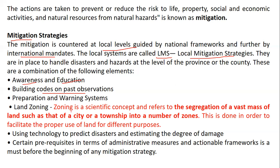Land zoning is a scientific concept referring to the segregation of land — such as a city or town — into a number of zones, done to ensure proper use of land for different purposes. Technology is used to predict disasters and estimate the degree of damage; for earthquakes, we have a scale which gives the magnitude. Equipment and tools provide warning signs so that evacuation can be carried out, shifting people and animals to a safe place, and we also get an estimation of the damage which is going to happen.